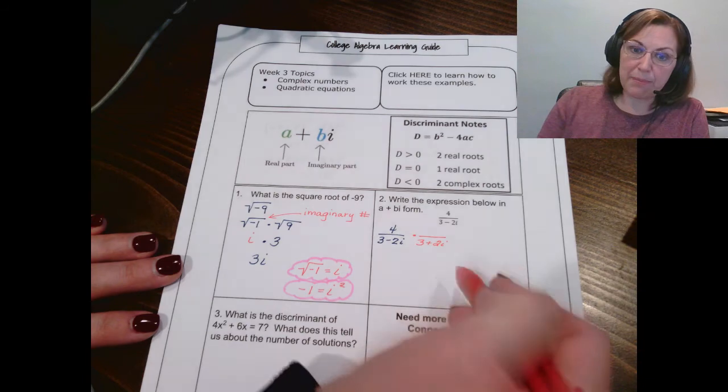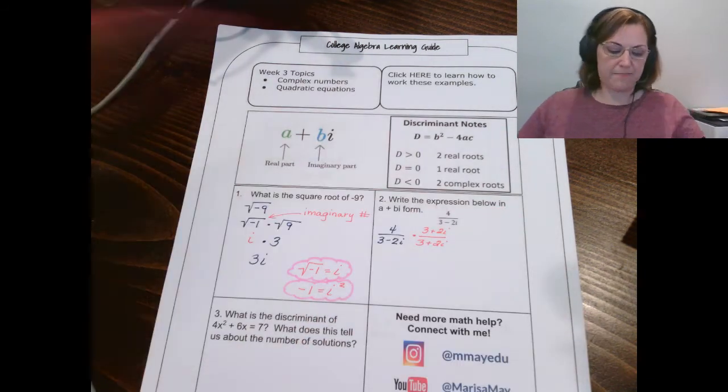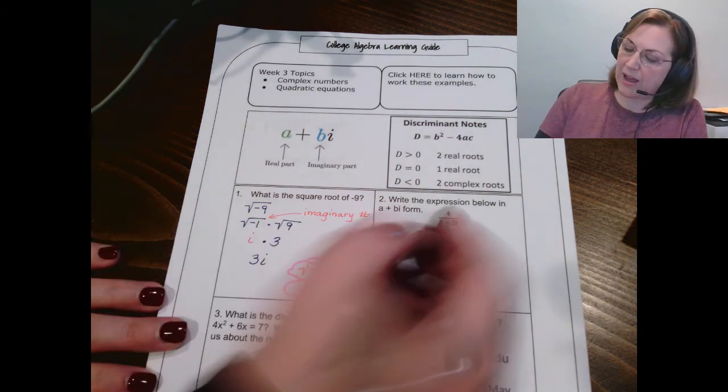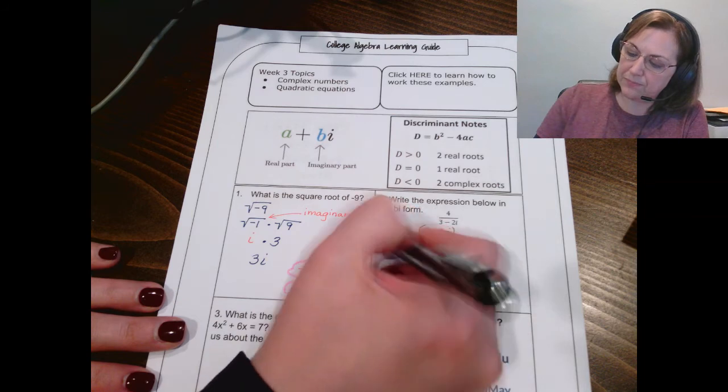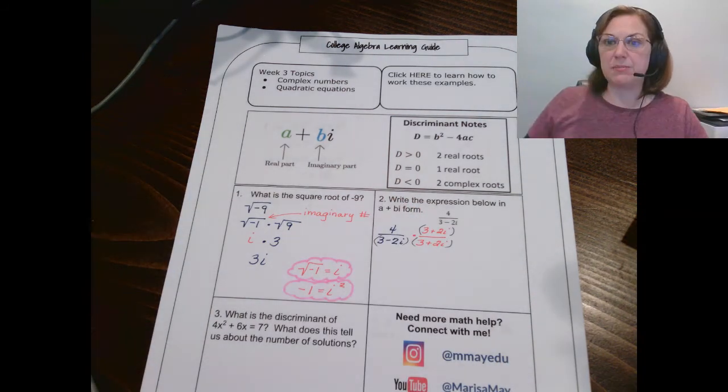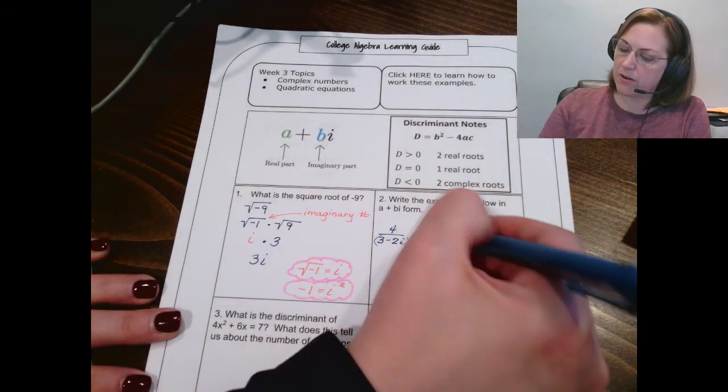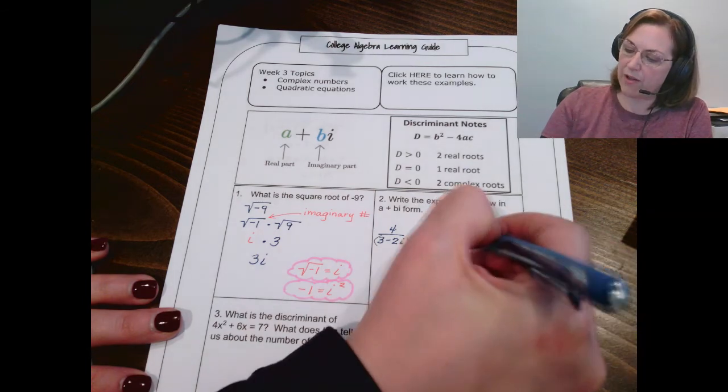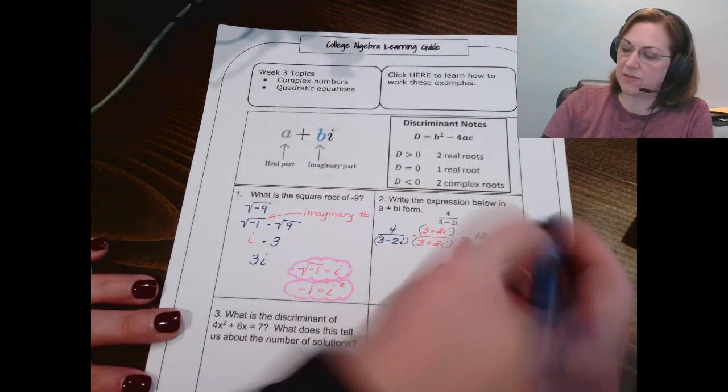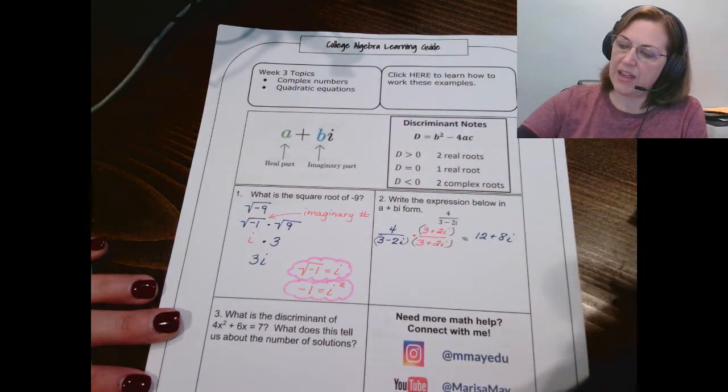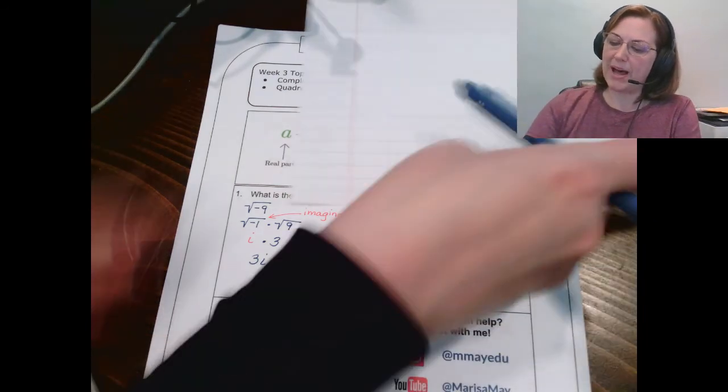Since I multiplied the bottom by that, I have to multiply the top by that as well. Just like we did before, I want to make sure to put those in parentheses so that we multiply through correctly. Now, I'm going to distribute on the top the 4. So, 4 times 3 gives me 12, and 4 times 2i gives me 8i.